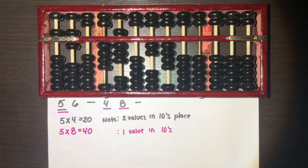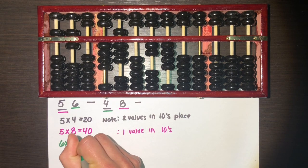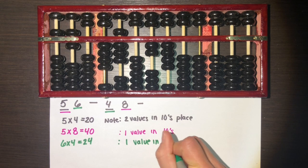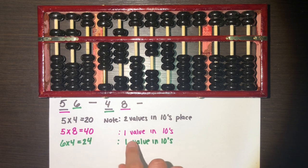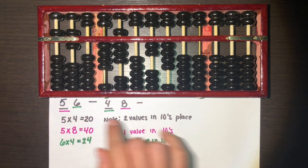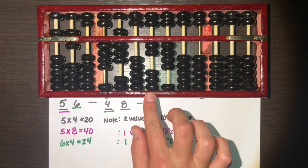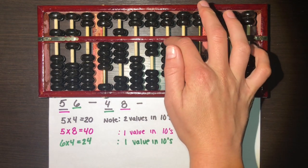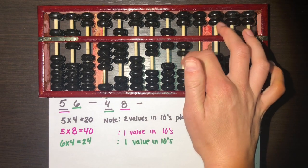Going back to our original numbers, we use six times four, which equals 24, and we have one value in the tens spot. We always want to start with those first two digits on the number. Since this is one different from our original starting spot, we go one to the right and add 24 — adding 10 first, then 20, then four ones.